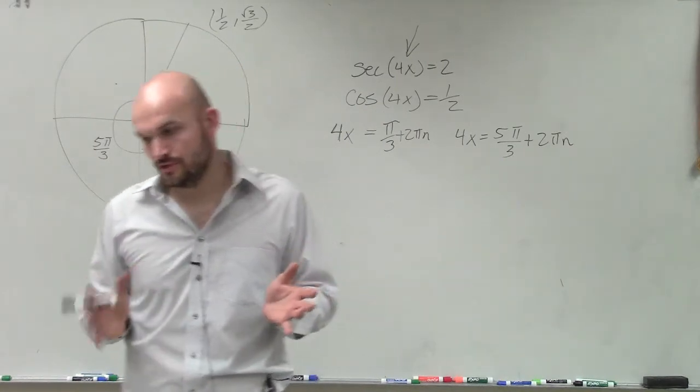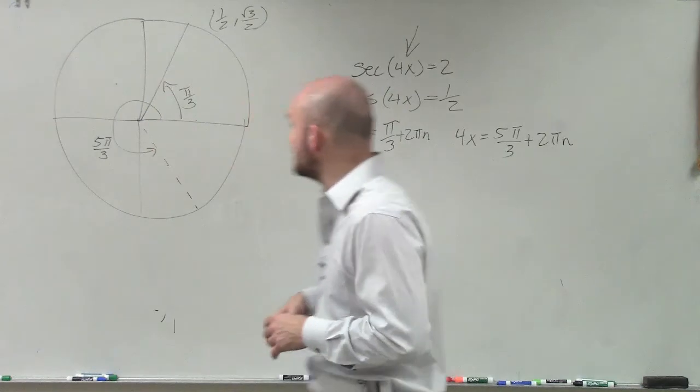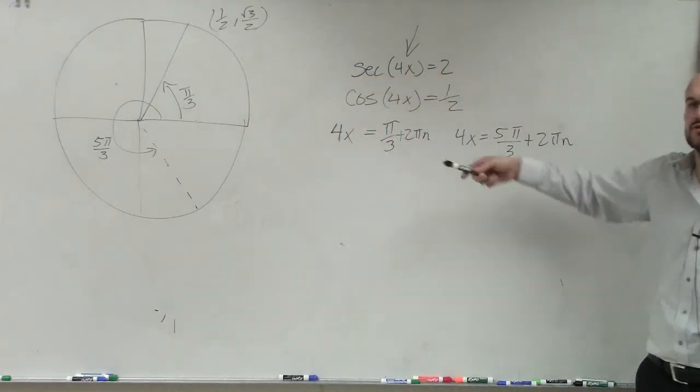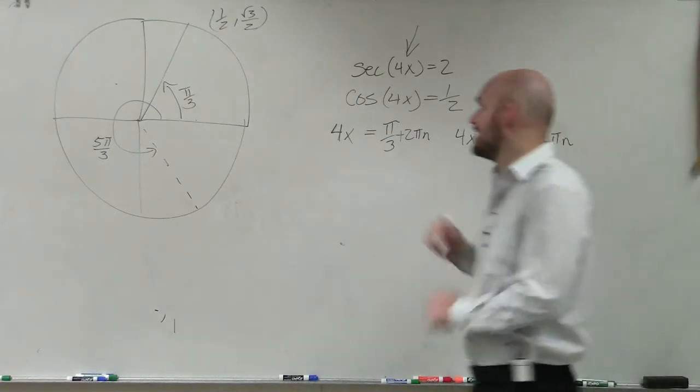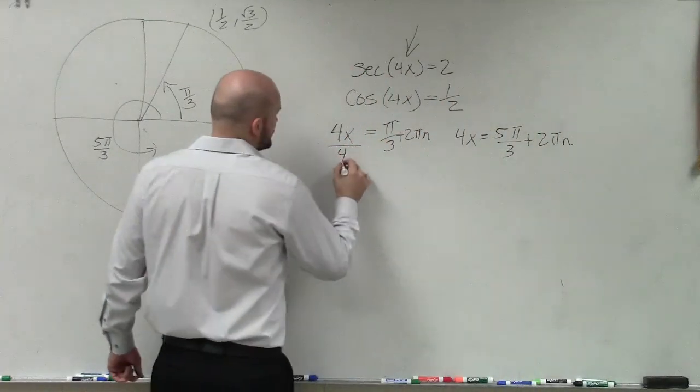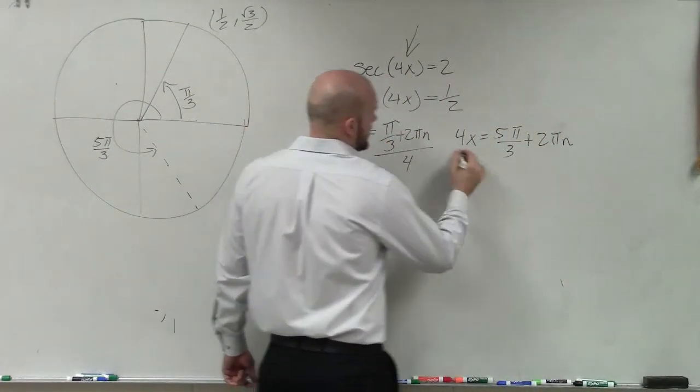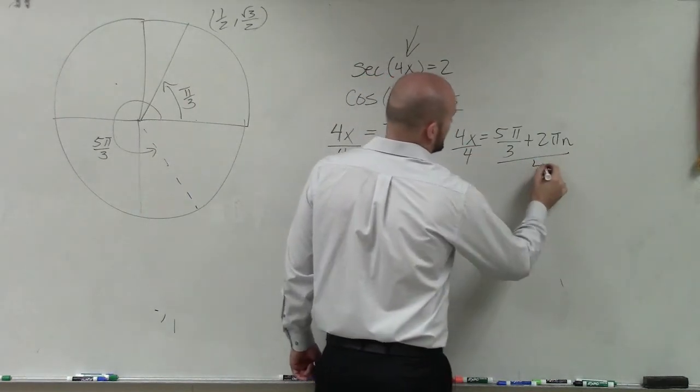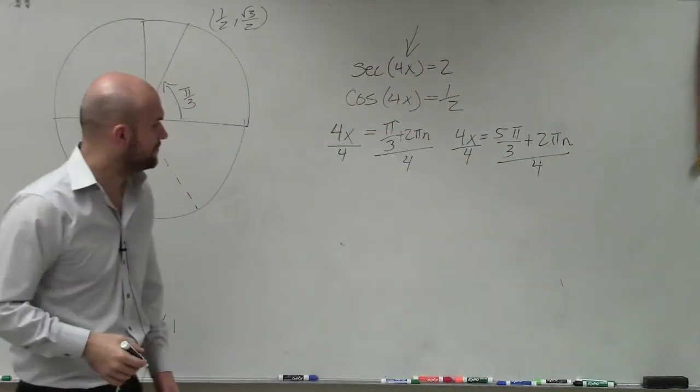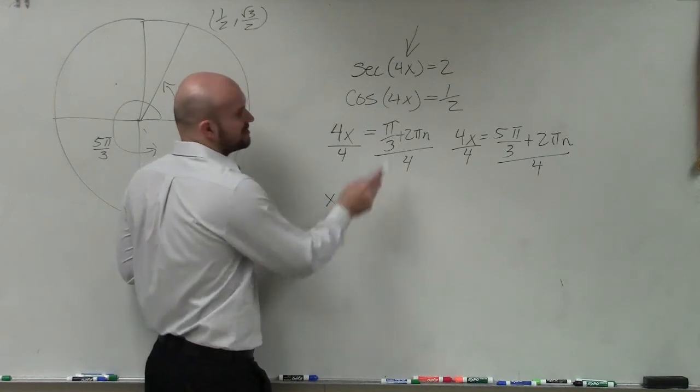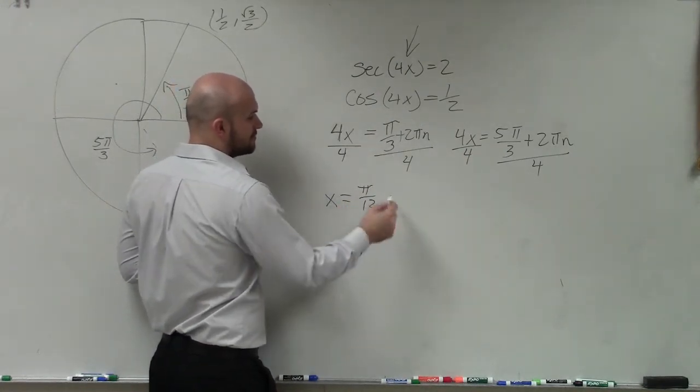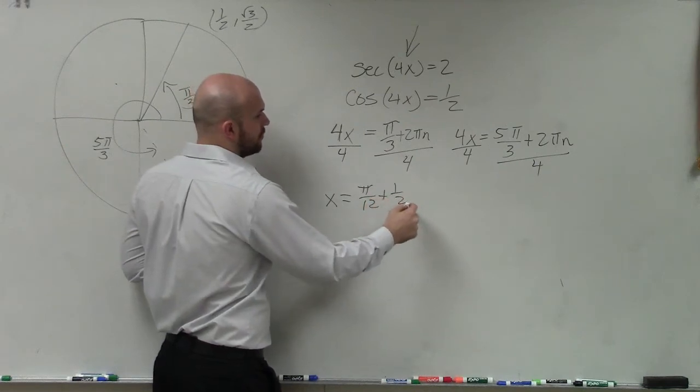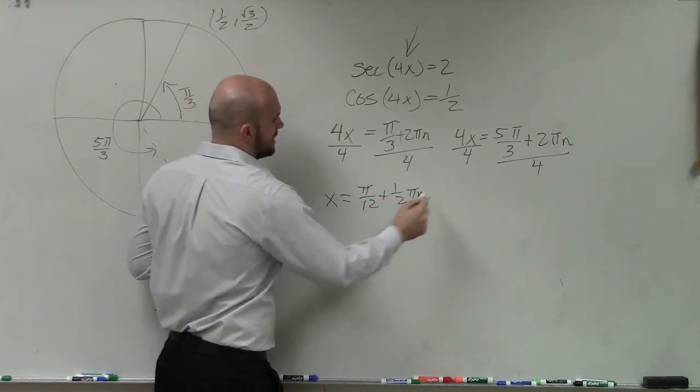But now, what I need to do is just solve for x. So you do these types of problems the exact same way, except now at the end, you can divide by your angle, or multiply by your angle, whatever is in your angle to do. So now, my final solution is x equals pi over 3 divided by 4 is pi over 12 plus 1 half pi n.